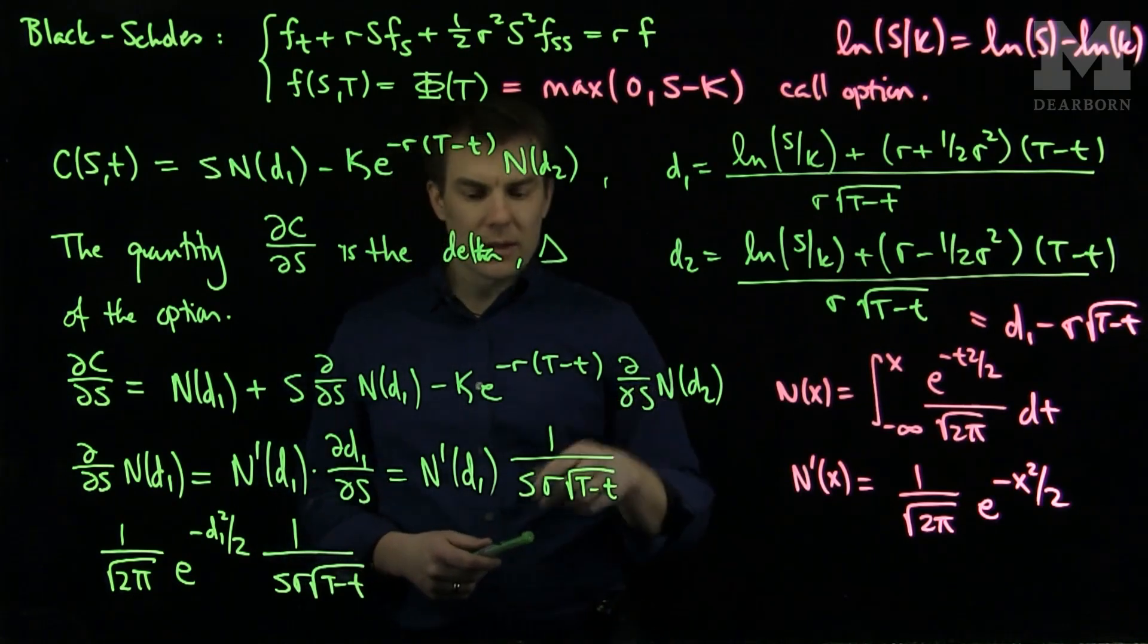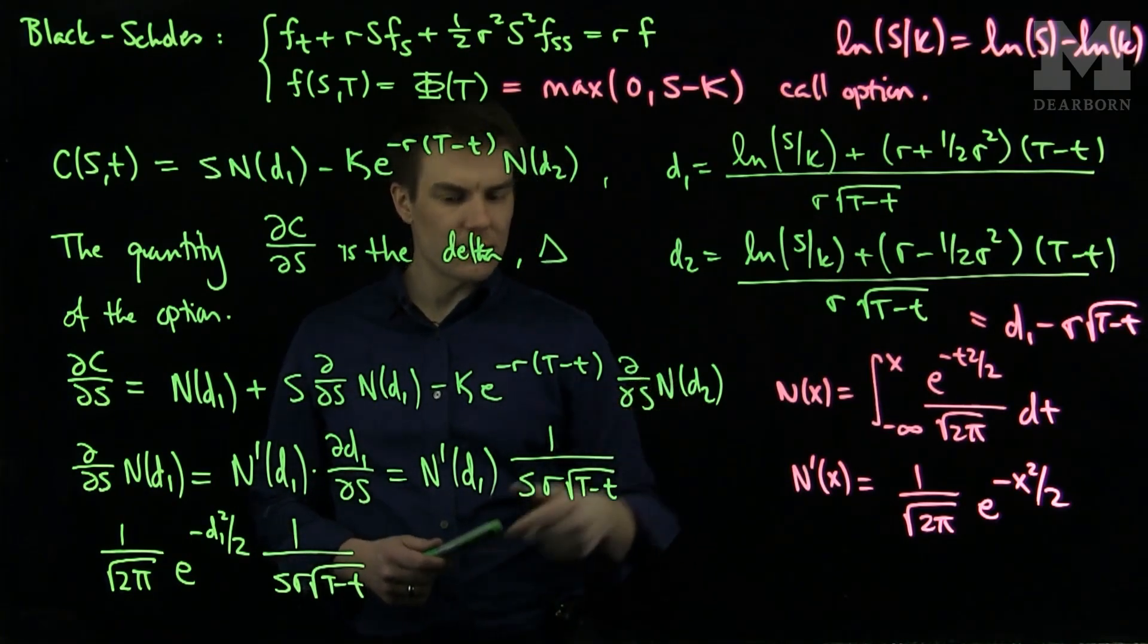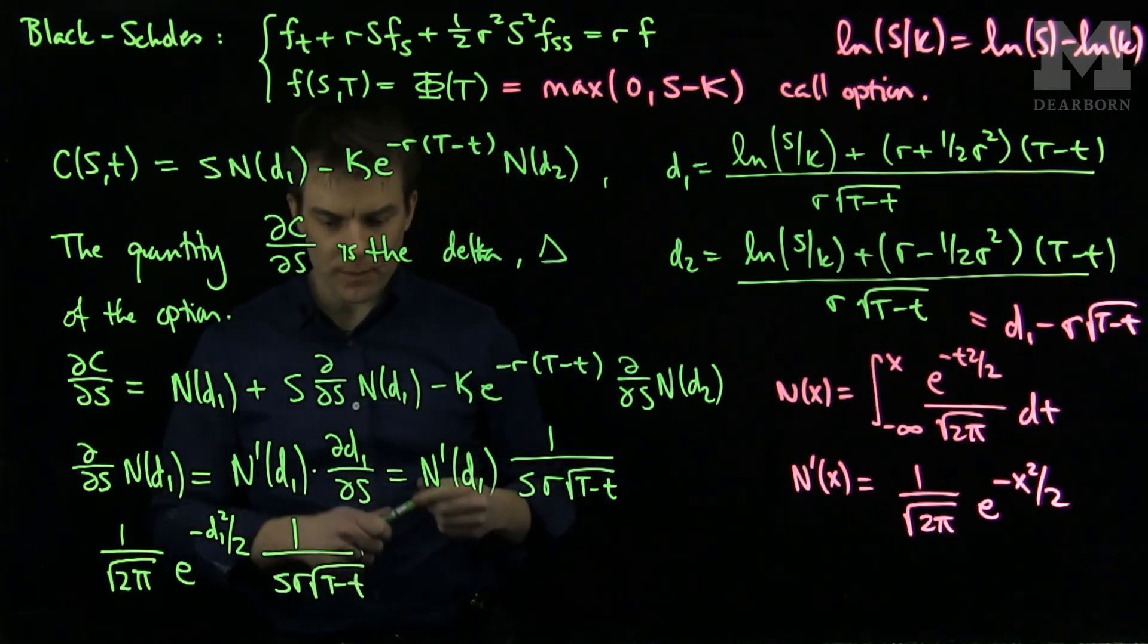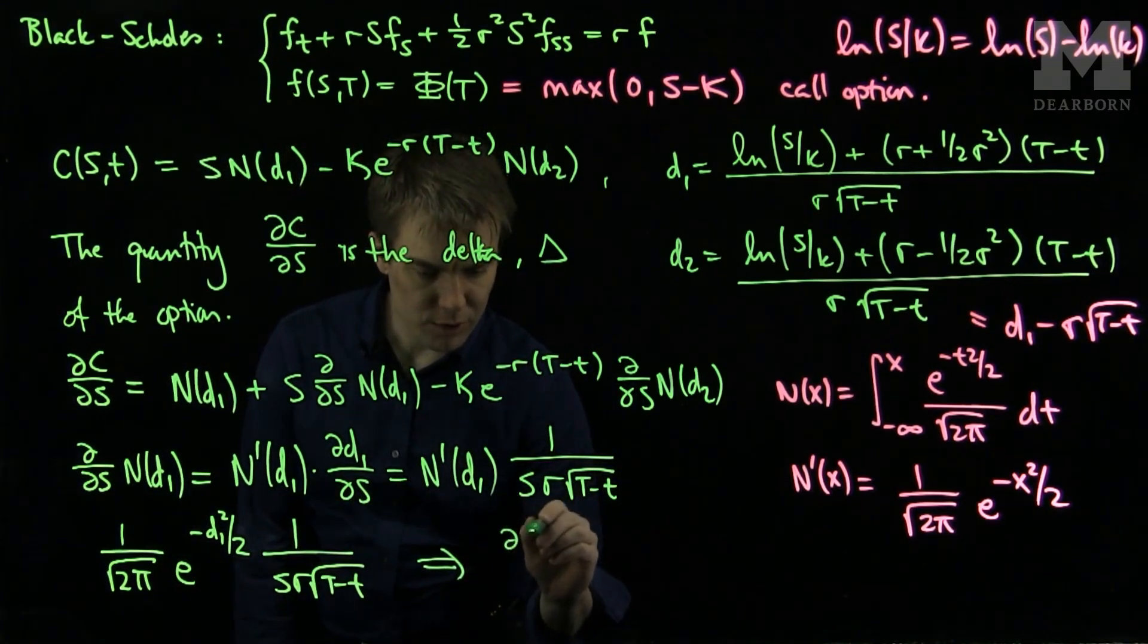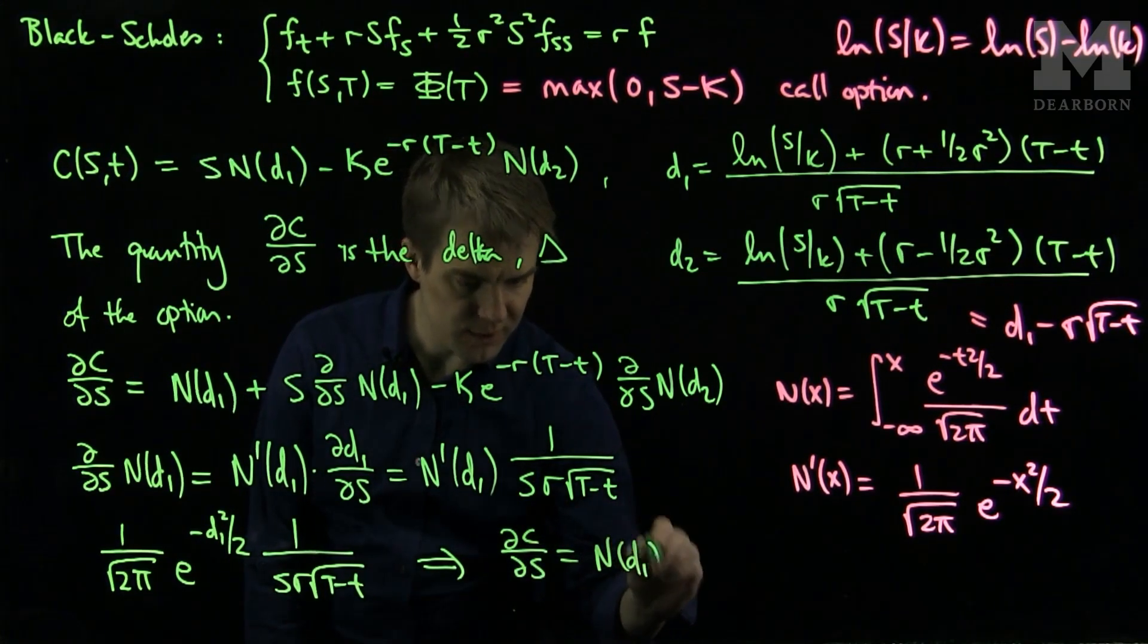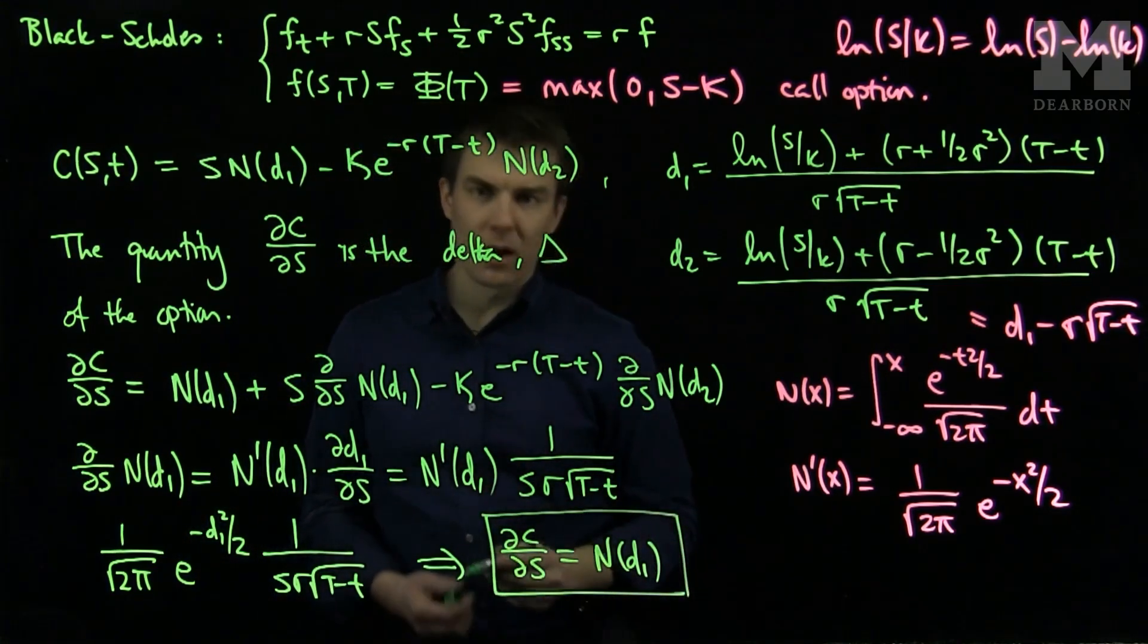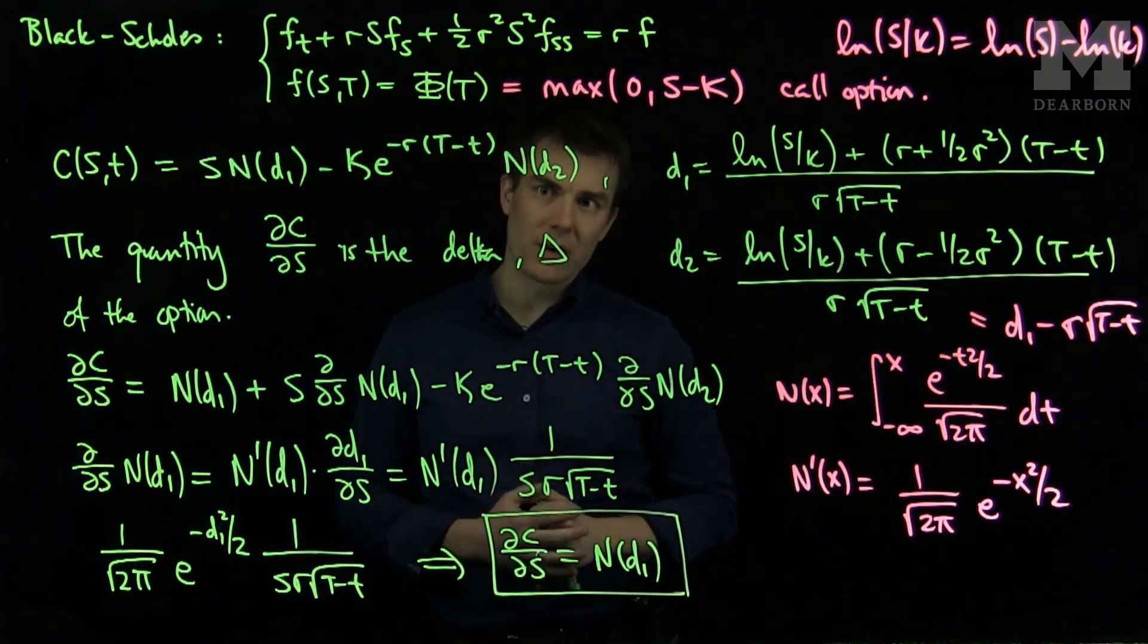We can similarly compute ∂/∂S of N(D2), and we will see that this is exactly equal to this expression. So combining these two terms, we will be able to conclude that ∂C/∂S is N(D1) as these terms will cancel out. We now have a formula for the delta of a call option which we'll use in future videos as a hedging strategy. Thank you very much.